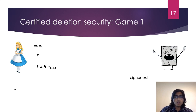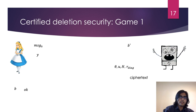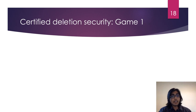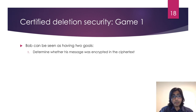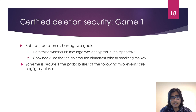Bob sends this string to Alice, who runs the verification algorithm on the string, and this outputs a bit OK. Alice's last action is to send the key she generated to Bob. At this point, Bob takes a guess as to the value of the bit B that Alice chose — this is as though he is determining whether the message that was encrypted by Alice was the message he sent to her or a different one. We can think of the adversary as wanting to do two things simultaneously: one is to determine whether his message was encrypted in the ciphertext he received, and two, convince Alice that he has actually deleted the ciphertext prior to receiving the key. Therefore, we may say that the security of the scheme holds if the probabilities of the two following events are negligibly close.